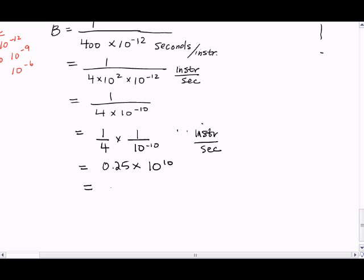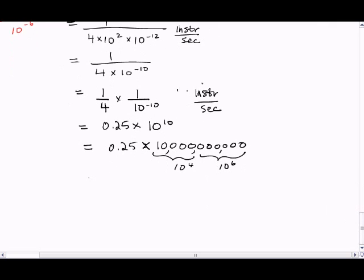So 0.25, so 10 to the 10th is 1 followed by 10 zeros. So let's put our commas in. We notice that this is a 10 to the 4th and this is a 10 to the 6th. So if we take the 0.25 and the 10 to the 4th, we get 2,500 and we're left with 10 to the 6th.